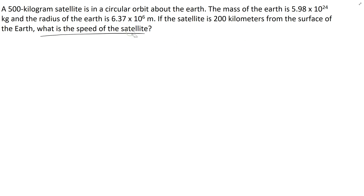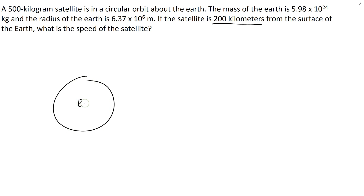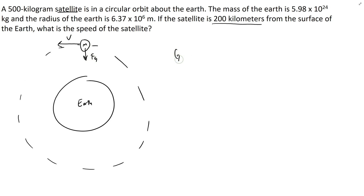Here we have a 500-kilogram satellite orbiting the Earth. The mass of the Earth and the radius of the Earth are listed. The satellite is 200 kilometers from the surface of the Earth, and we want to find the speed of that satellite. If we draw the Earth and then place the satellite — giving it a mass of m, because a satellite is anything that orbits a planet, so a moon is a satellite — this looks just like what we did before, with the force of gravity acting downward.